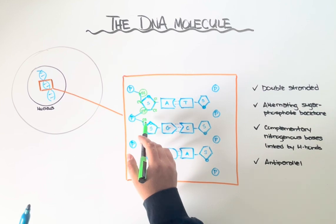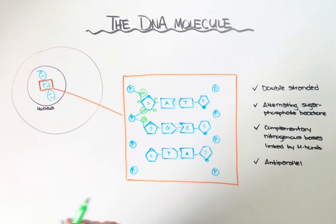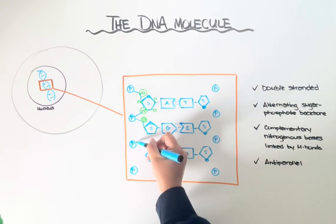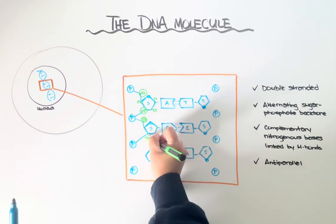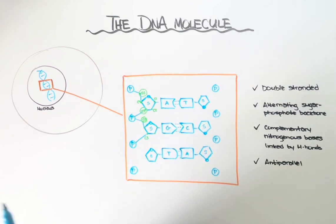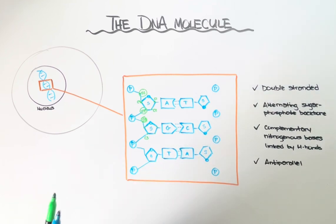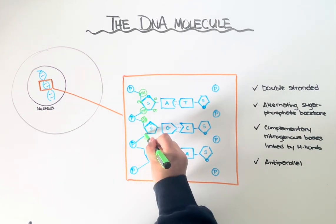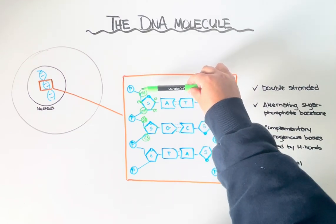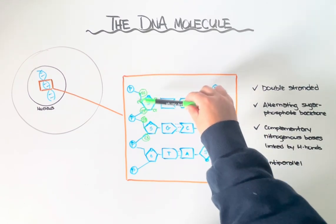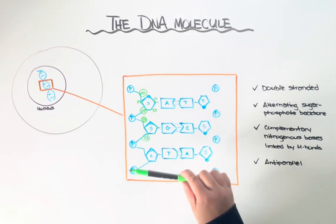This phosphate is first bonded to carbon five of the next sugar. And this phosphate is then bonded to carbon three of the next sugar. And like I said, that pattern continues to repeat. So what we see here is an alternating pattern where each phosphate is attached to either carbon five or carbon three. And then carbon five and then carbon three, and so on.